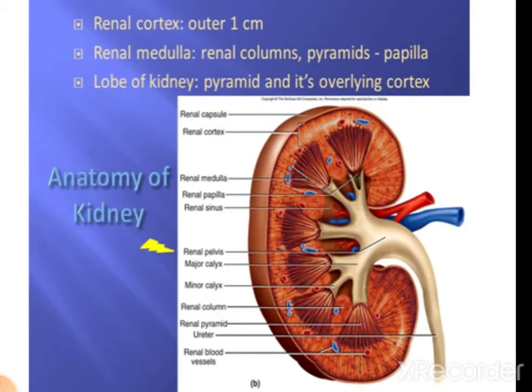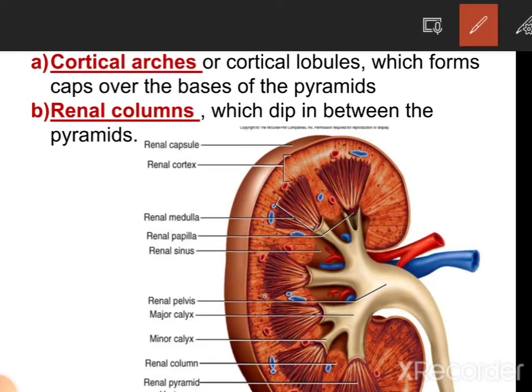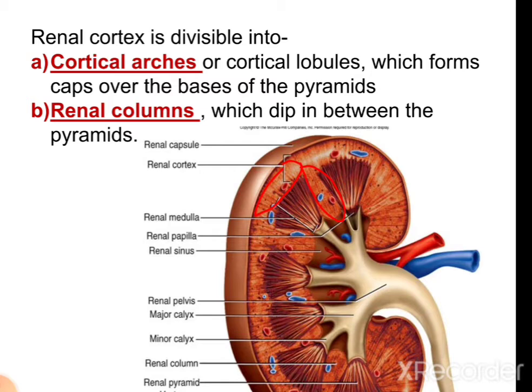The interior of the kidney is divided into the outer cortex and inner medulla. In the cortex we have lobes of the kidney like pyramids — triangular structures with their overlying cortical part. The renal cortex is divided into cortical arches and renal columns. Cortical arches are the cortical lobules which form the cap over the base of each pyramid. The renal column is the area that dips in between the renal pyramids.